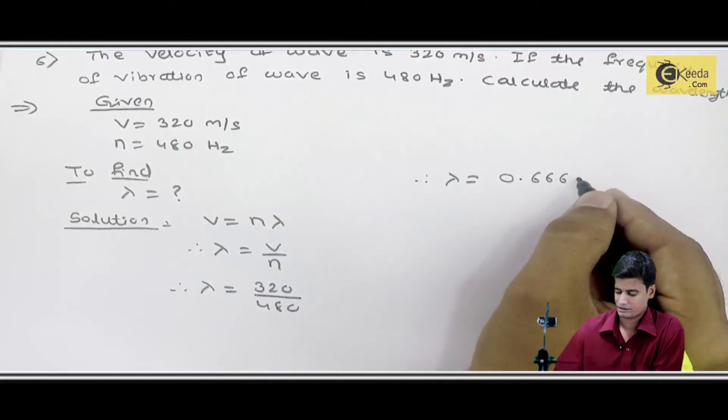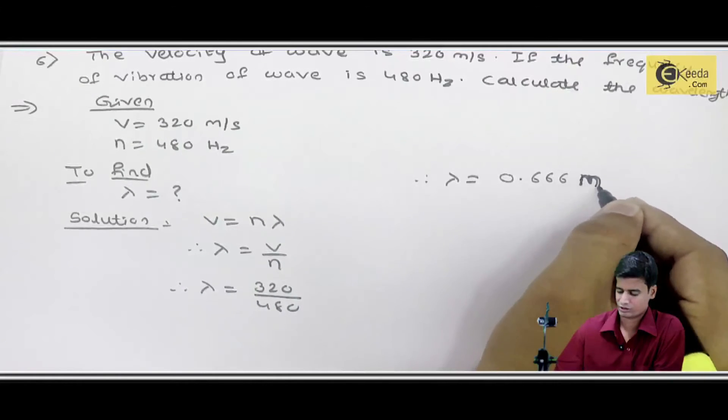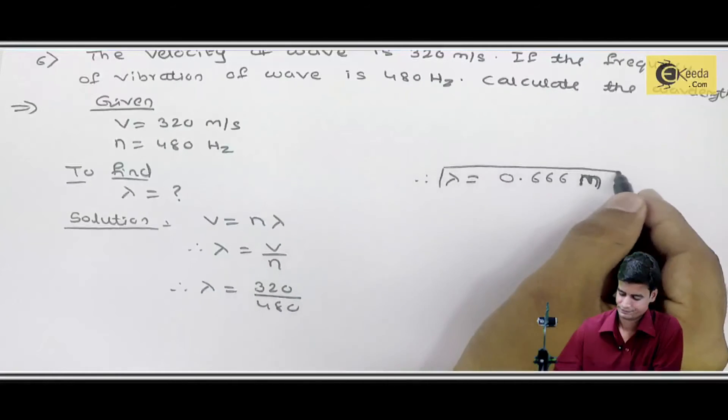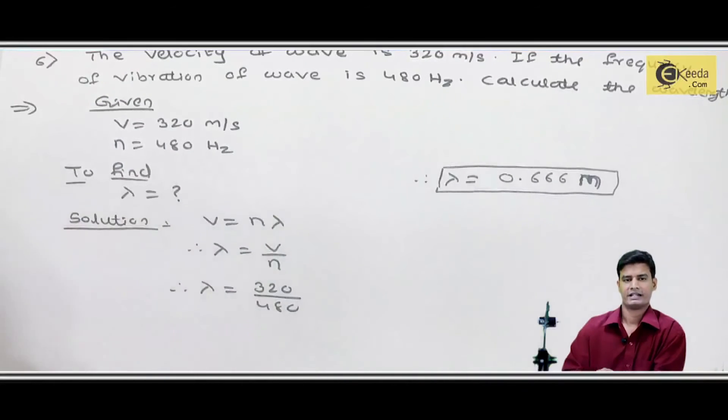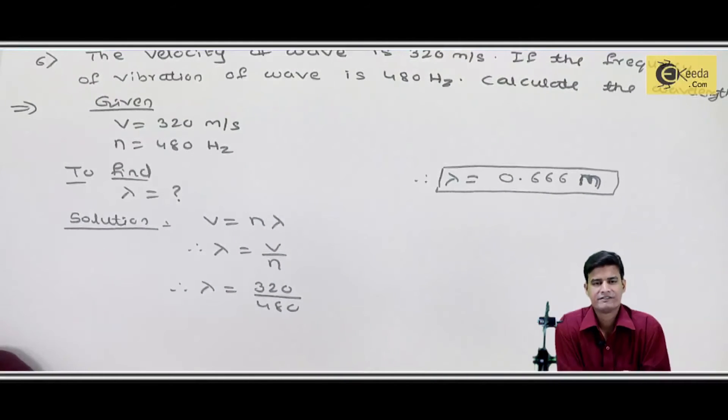Meter, इसका unit होता है meter. तो इसमें मुझे given terms क्या क्या थे - velocity दी थी, frequency दिया था, and calculate करना था मुझे wavelength.